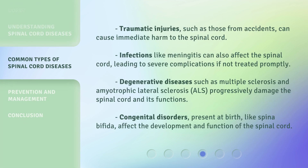Traumatic injuries, such as those from accidents, can cause immediate harm to the spinal cord. Infections like meningitis can also affect the spinal cord, leading to severe complications if not treated promptly. Degenerative diseases, such as multiple sclerosis and amyotrophic lateral sclerosis (ALS), progressively damage the spinal cord and its functions. Congenital disorders, present at birth, like spina bifida, affect the development and function of the spinal cord.